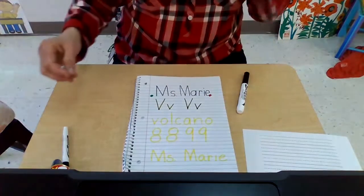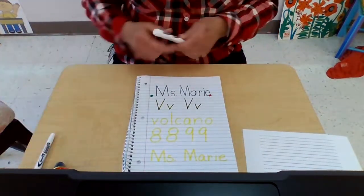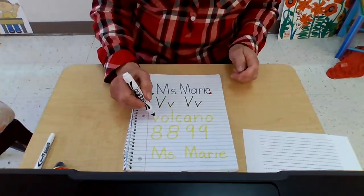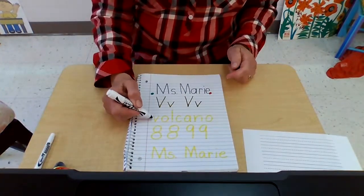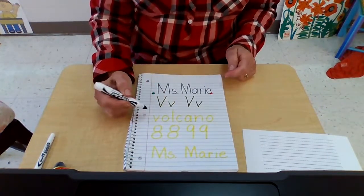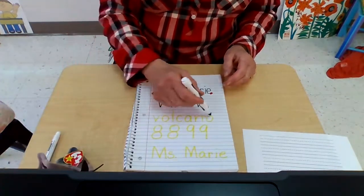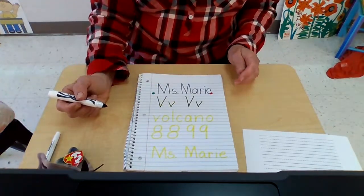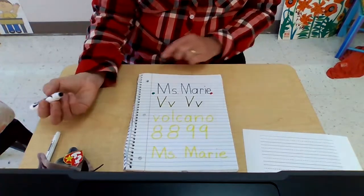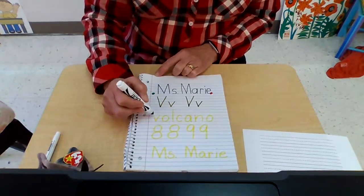The next thing — on the next line down, what we're going to do is write a word that begins with the V sound. This is a big word, but I had to put it in here because it's one of Miss Nikki's favorite V words: volcano. She loves erupting her volcano, and we'll be doing that in class this week. Let's write volcano — get a grown-up to help you with tracing lines.